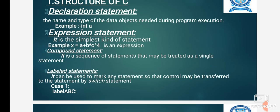Declaration statements name the type of data objects needed during program execution. For example, integer a, where integer is the data type and a is a variable. Expression statements are the simplest kind of statement, like x equals a plus b times c to the power of 4.